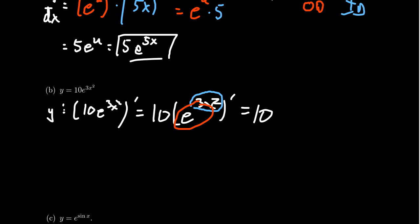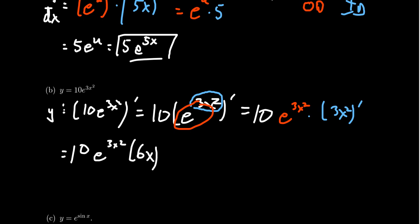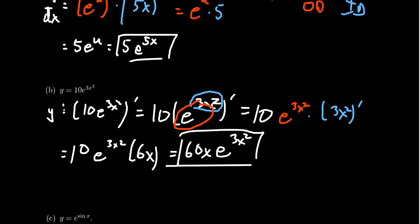So the derivative of e to the 3x squared gives back e to the 3x squared, since e to the x is its own derivative. But we must not forget the inner derivative — we need the derivative of 3x squared. By the power rule, the derivative of 3x squared is 6x. Multiplying 6 times 10 gives 60, so the final derivative is 60x times e to the 3x squared.